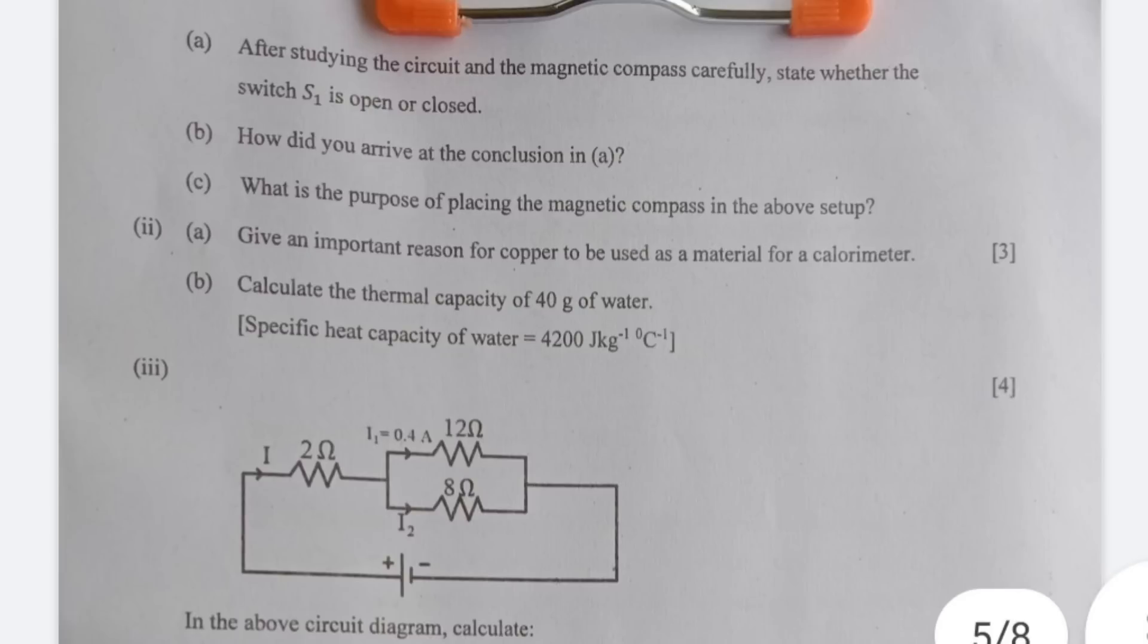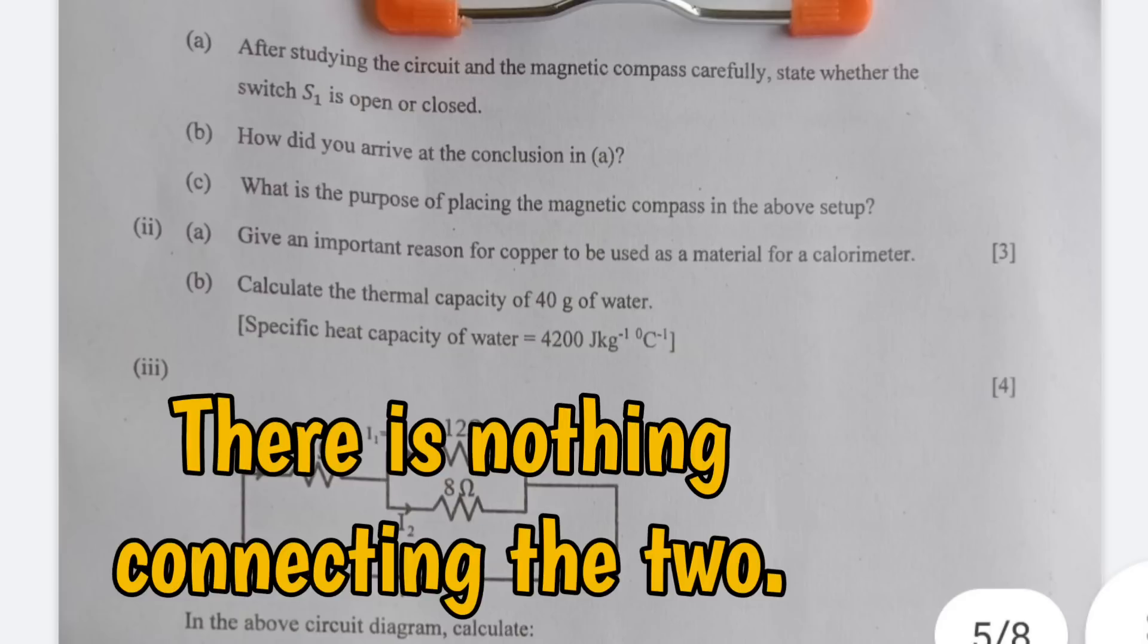The switch S1 is open. Students should know that the off condition of a switch is called an open switch. B, how did you arrive at the conclusion in A whether you gave it as open or closed: because the circuit is discontinuous or you could have written the compass needle is pointing geographic north-south which implies that the coil AB is not magnetic.